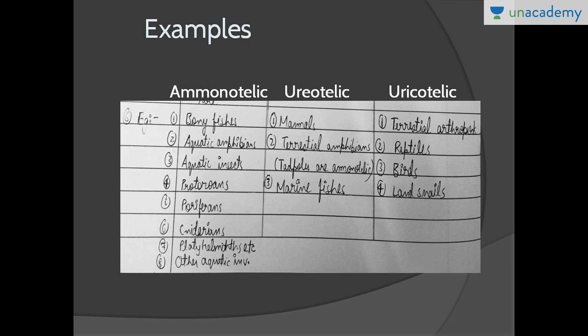Marine fishes need to conserve water. Although they live surrounded by water, that water is hypertonic, so they keep losing water and must conserve it — hence they are ureotelic. All terrestrial amphibians are also ureotelic. Note that tadpoles are ammonotelic, but terrestrial amphibians like frogs are ureotelic.